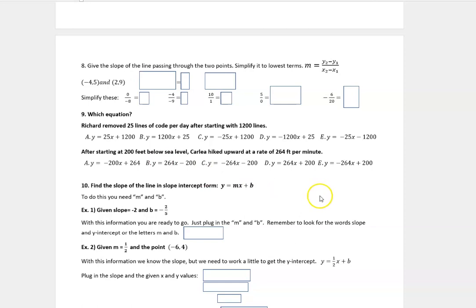So we're going to look at the rest of this now, starting with number nine. And in this case, we're translating a statement in English to an equation. And this says, Richard removed 25 lines of code per day after starting with 1,200 lines. So what we want to look for when we're trying to translate this, and this is in slope-intercept form, all of these are. That tells us the y-intercept is here at the end. And that's your starting point. And then you have your slope next to your x variable. And so this is the rate of change. So those are the two things you're looking for. What's the starting point and what's the rate of change?